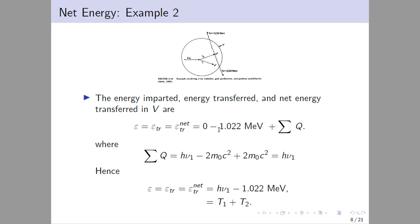The net energy transfer equals 1.022 MeV plus the sum of Q, where Q = H_ν1 minus 2m₀c² plus 2m₀c² = H_ν1. Hence, ε_transfer and net ε_transfer equal H_ν1 minus 1.022 MeV, giving T1 plus T2. This energy minus the escaping energy is what remains to be absorbed by the molecule.